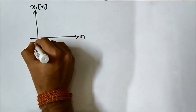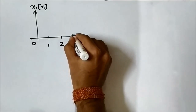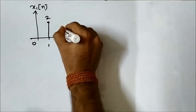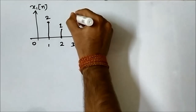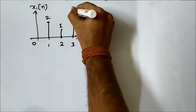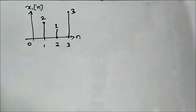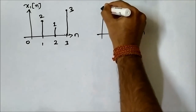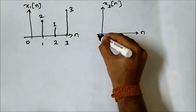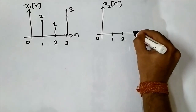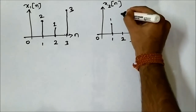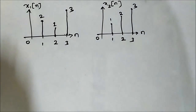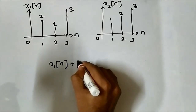Let us take a discrete time signal x1[n] with values at n=0,1,2,3. At n=1 it is 2, at n=2 it is 1, and at n=3 it is 3. And another discrete time signal x2[n] with the same range n=0,1,2,3: at n=1 it is 1, at n=2 it is 2, at n=3 it is 3.